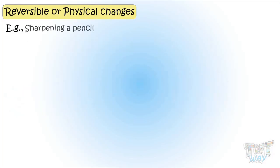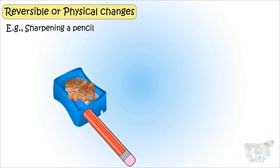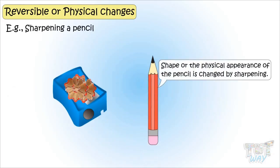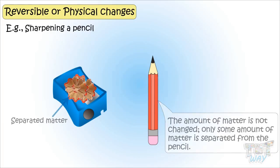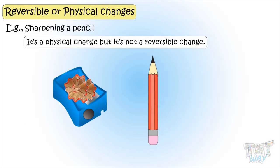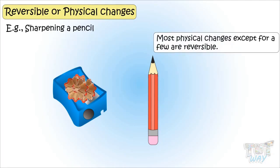Here is another example: sharpening a pencil. If a pencil is sharpened, only its shape is changed, or the physical appearance of the object is changed. Also, the amount of matter is not changed — only some amount of matter is separated from the pencil. So it's a physical change, but it's not a reversible change. Remember, most physical changes are reversible, but not all physical changes are reversible.